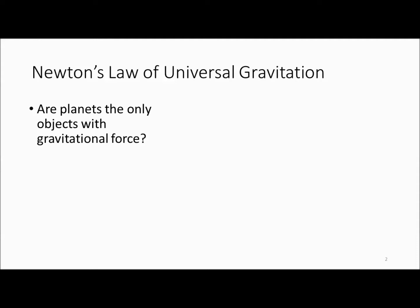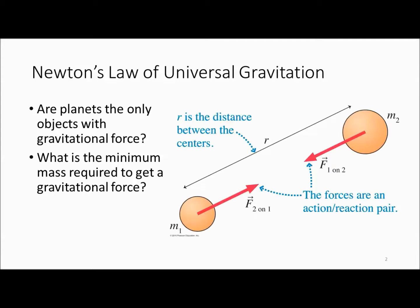We're going to talk about gravity and Newton's Universal Law of Gravitation. So the question is, are planets the only objects with a gravitational force? What is the minimum mass required to get a gravitational force? Well, there is no minimum mass. Any pair of objects that have mass will have a gravitational force between them.